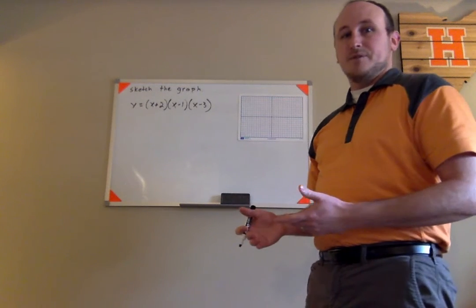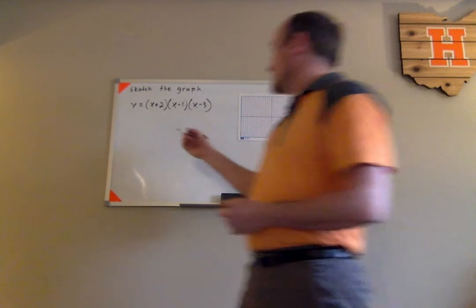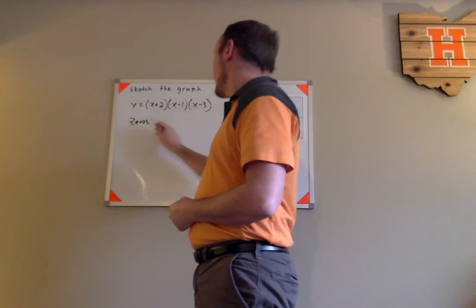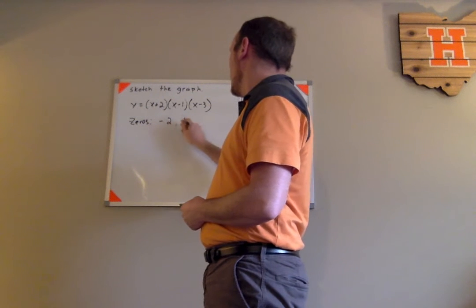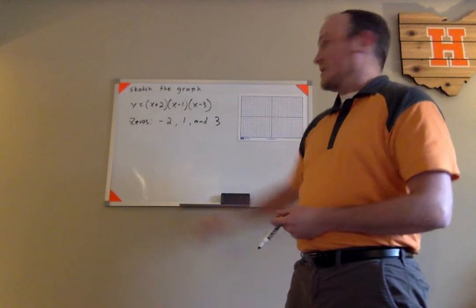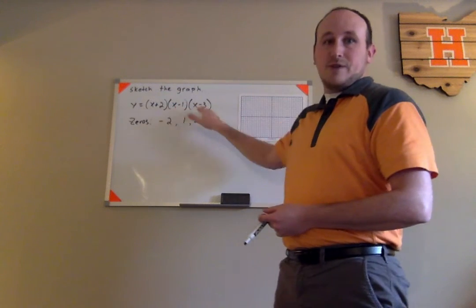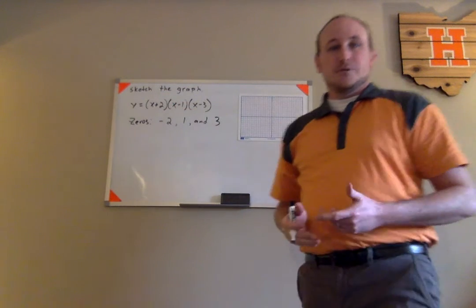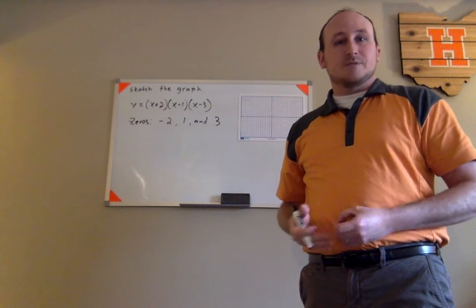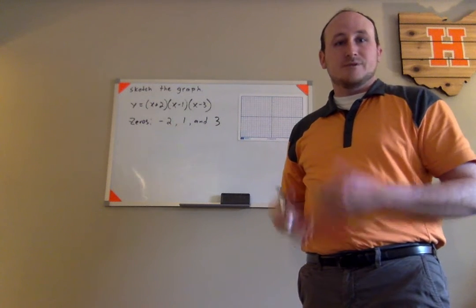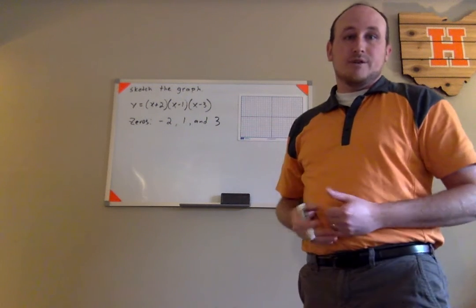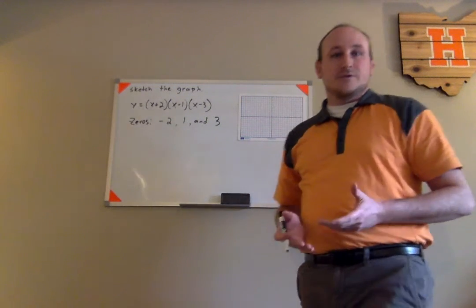We've already found the zeros in a previous example, but I'll go ahead and do that again. The zeros of this function are negative two, one, and three. Those are the values of x we find by setting each individual linear factor equal to zero and solving. The real zeros of this polynomial function are the x-intercepts of its graph. This graph will cross the x-axis at all three of those zeros.